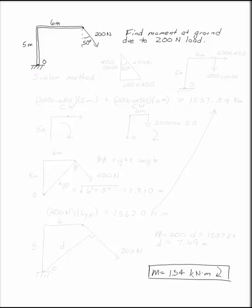Find the moment at the ground due to the 200-Newton load if the 200-Newton load is at 50 degrees from the vertical. The easiest way to do this is to break that 200-Newton load up into its component parts and use the scalar method to find the moment.